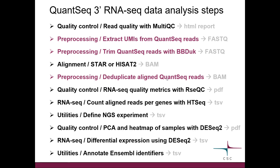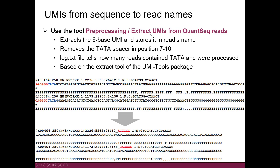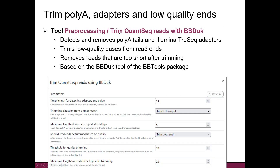Let's look at these specific steps in more detail. First, extracting the UMIs. We have a six-base UMI followed by a TATA spacer, which we want to get rid of. The TATA spacer is the same in all reads and the UMI varies. We cut the read there, remove the TATA spacer, and put the UMI into the read name. The end result is the UMI stored in the read name and the read itself is shorter.